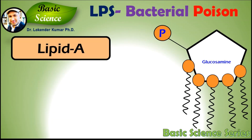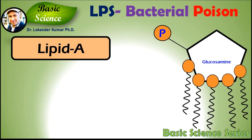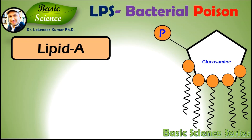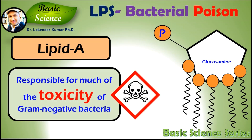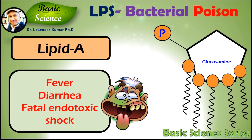Lipid A is a phosphorylated glucosamine disaccharide decorated with multiple fatty acids. These hydrophobic fatty acid chains anchor the LPS into the bacterial membrane. The lipid A domain is responsible for much of the toxicity of gram-negative bacteria. Lipid A released into the circulation can cause fever, diarrhea, and possible fatal endotoxic shock, also called septic shock.